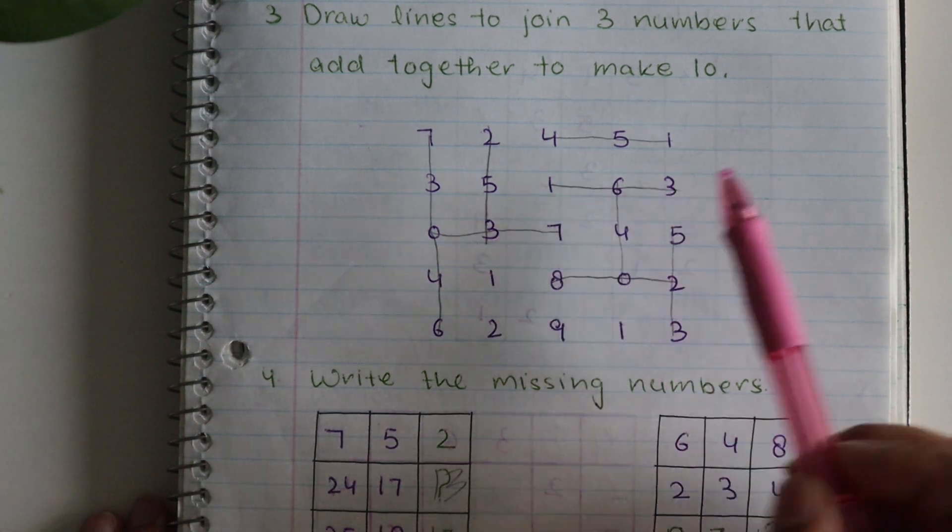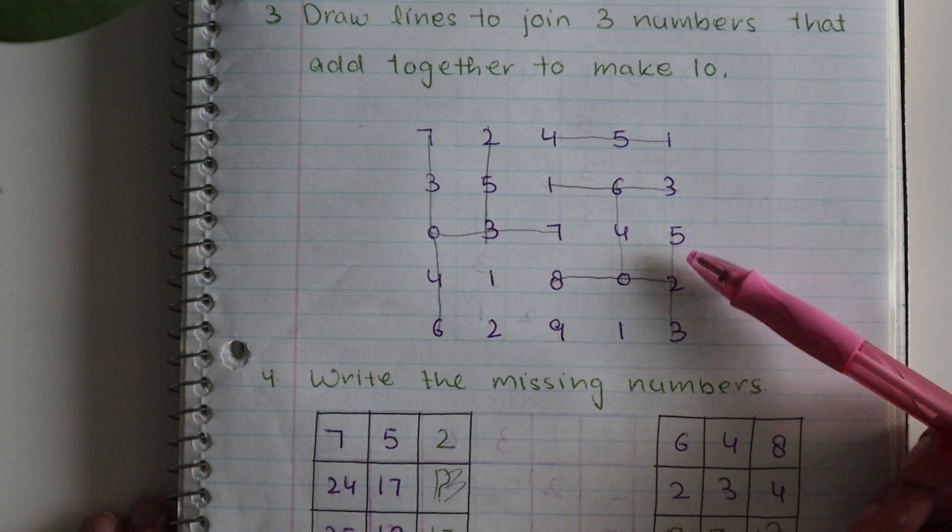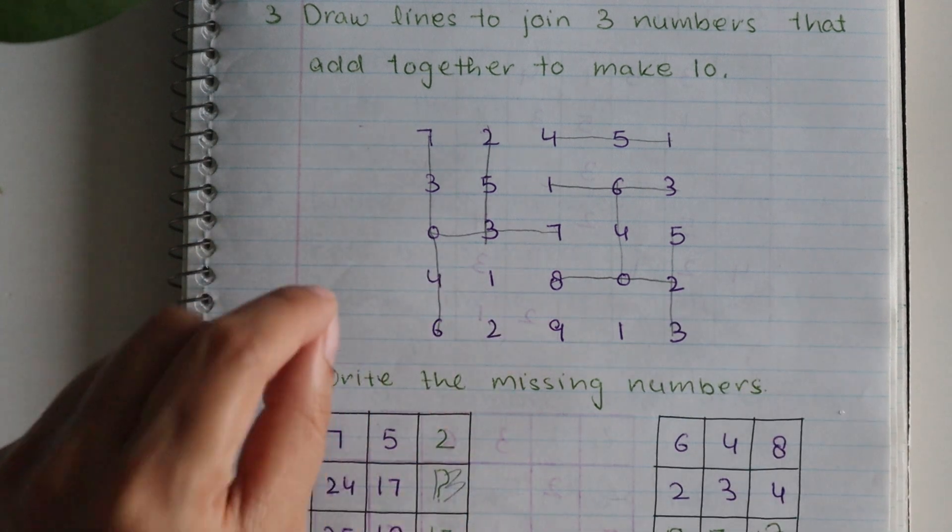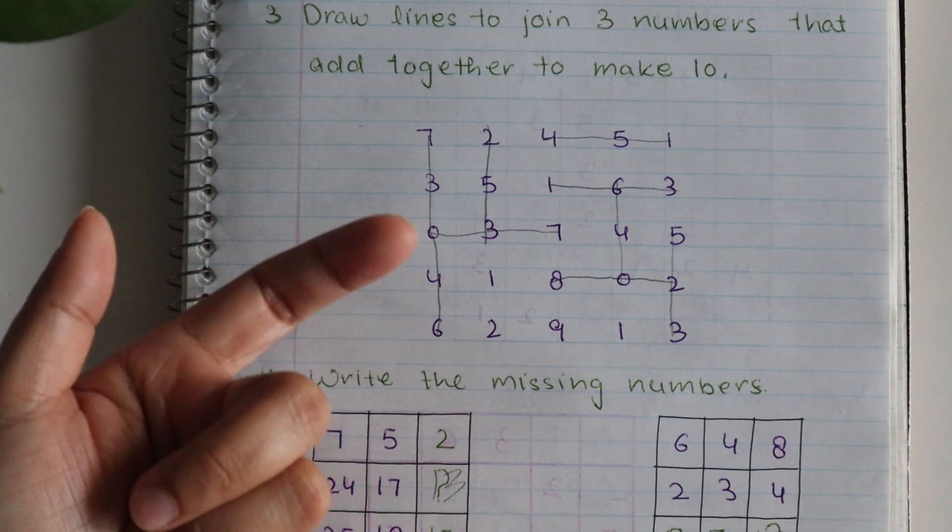For example, as you can see in the first row, here four plus five is nine, nine plus one is ten. So these three numbers add up. Then we have one, six, three, six, four, zero, five, two, three.